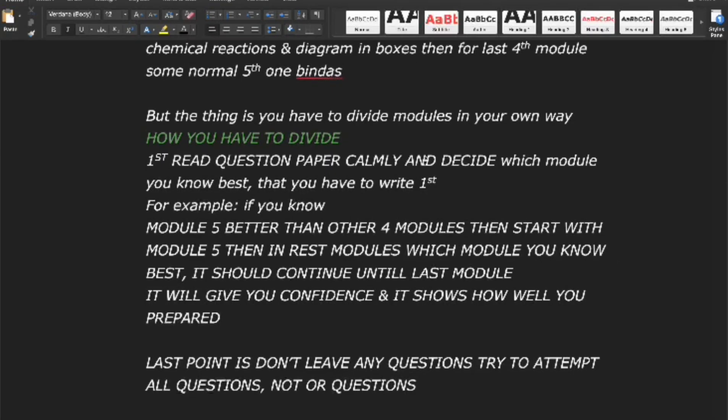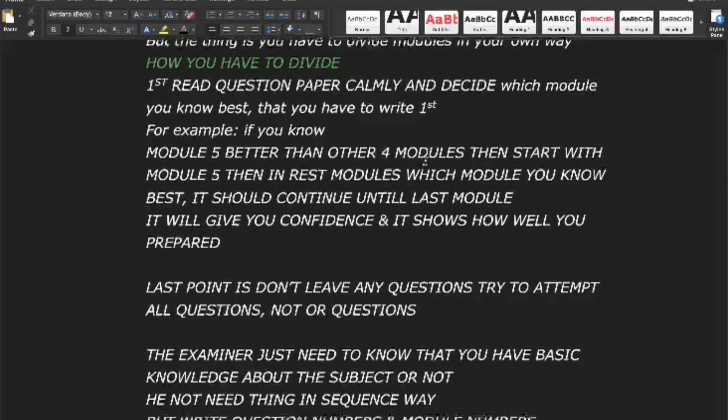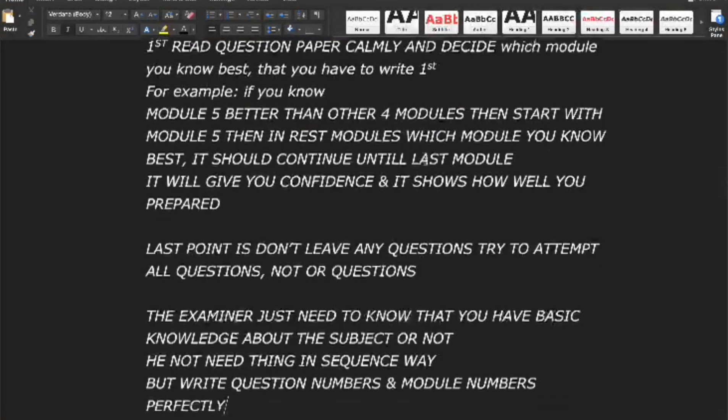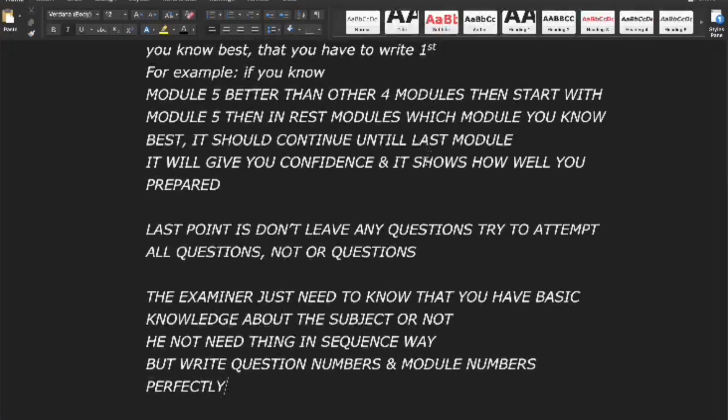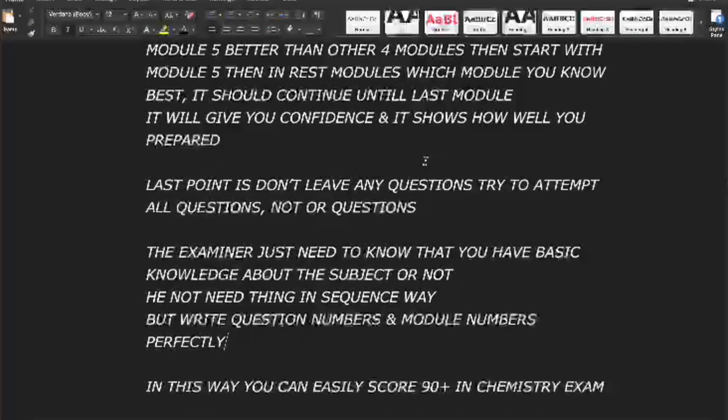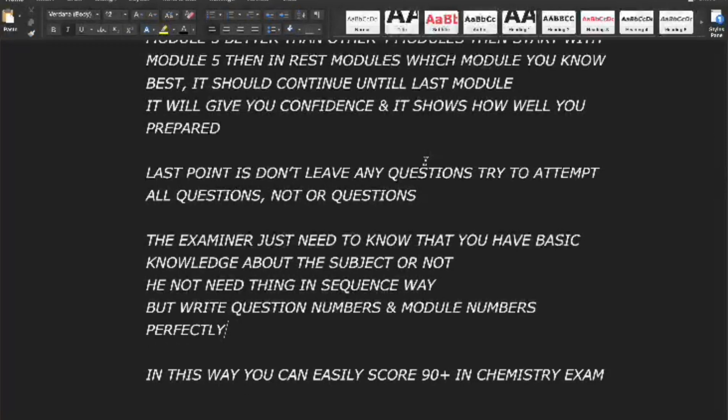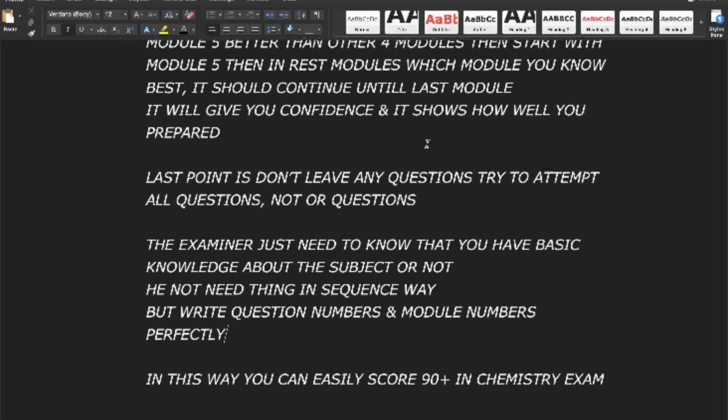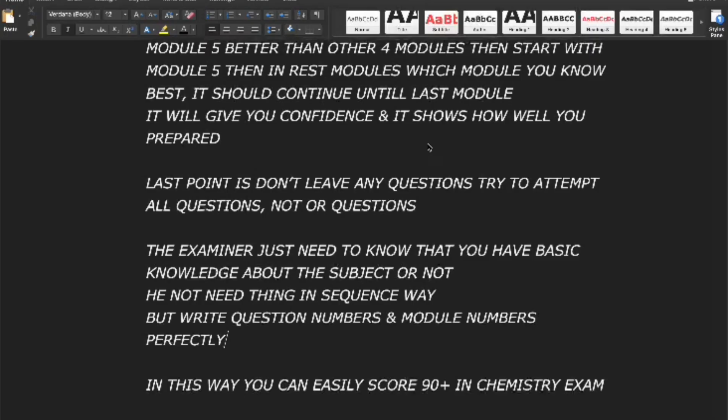How to divide modules: 1. Commonly read the question paper, decide which module you know best and start with that. For example, if you're confident in module 5, start with it and continue with other modules based on your confidence too. Attempt all questions, including the OR questions, as examiners look for basic subject knowledge rather than perfect sequencing.